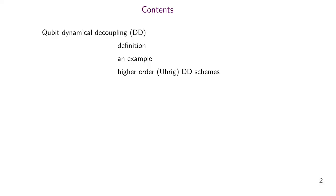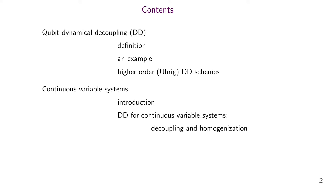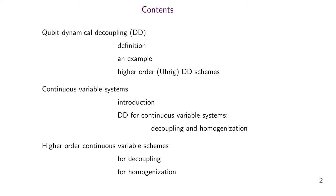That's what we are doing today. Since not all of you might be very familiar with the technique of dynamical decoupling, I will first introduce this for the qubit or finite-dimensional setting with a definition, a simple example, and then present the high-order URIC dynamical decoupling schemes. Then we come to the continuous variable setting with an introduction, redefining what dynamical decoupling means here — involving the two aspects of decoupling and homogenization of bosonic modes — and then present our higher-order schemes for decoupling and homogenization.